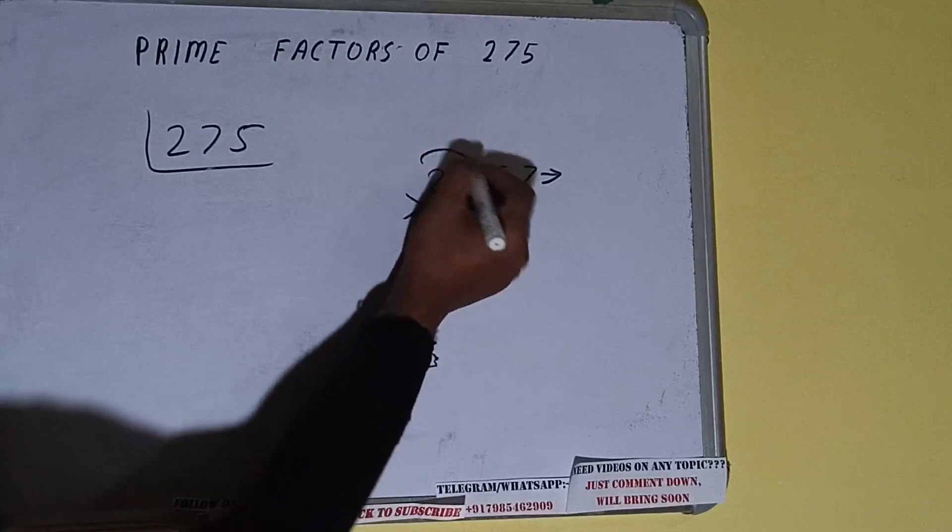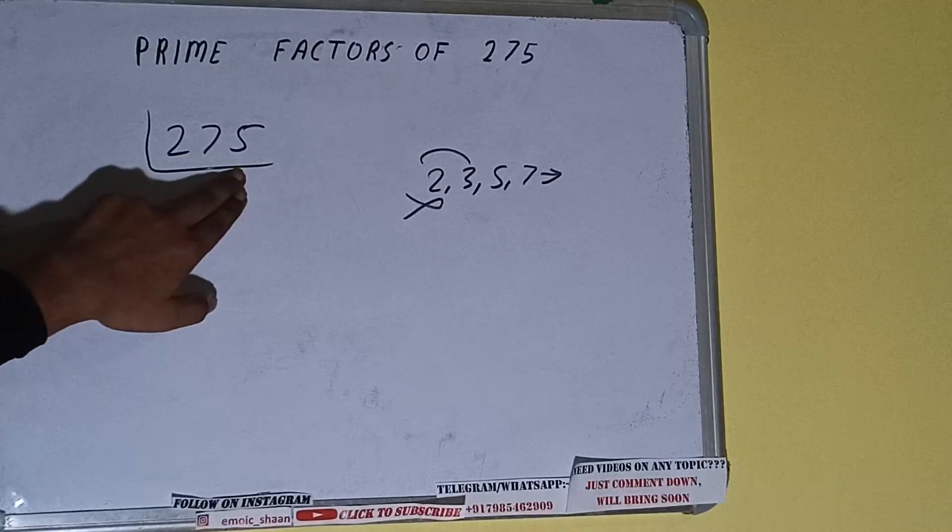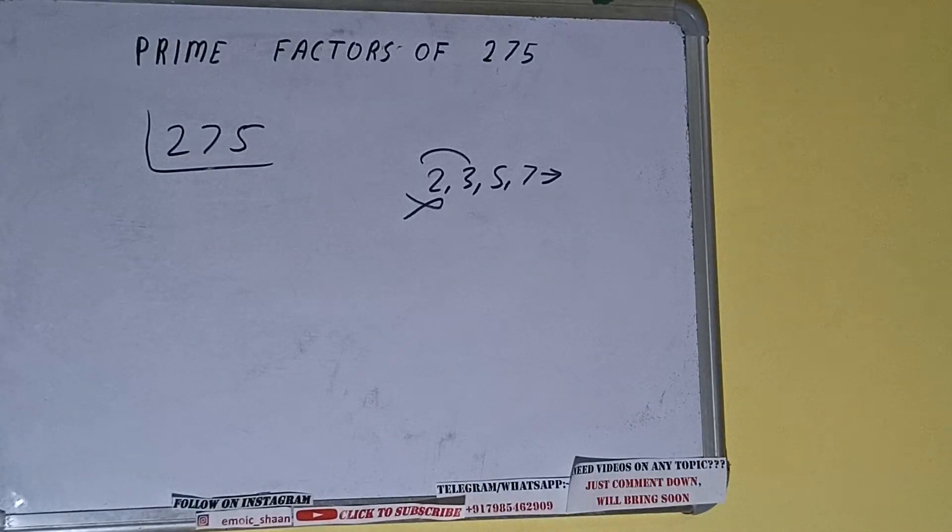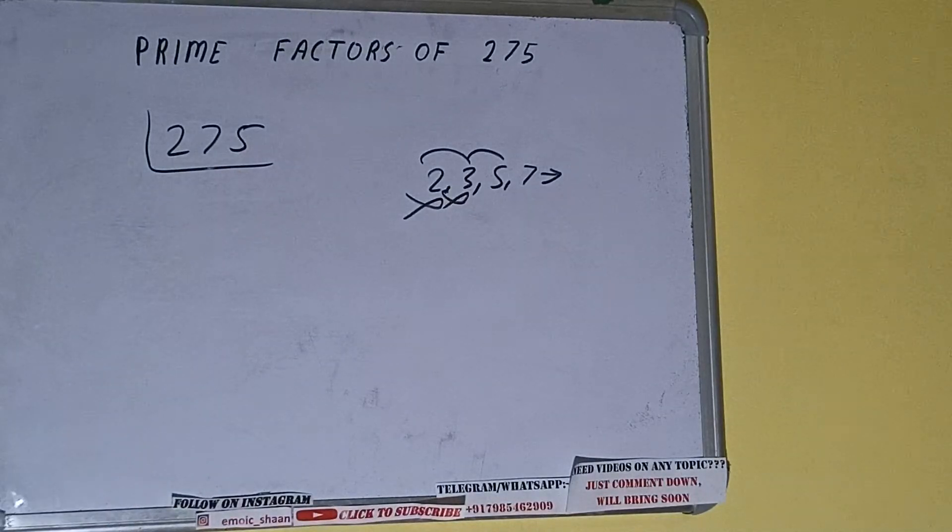So we'll check with the next lowest prime number, that is 3. Three nines are 27, three ones are 3, two left. It is not divisible by 3 also. Let's check with 5. The last digit is 5, so it is divisible by 5.